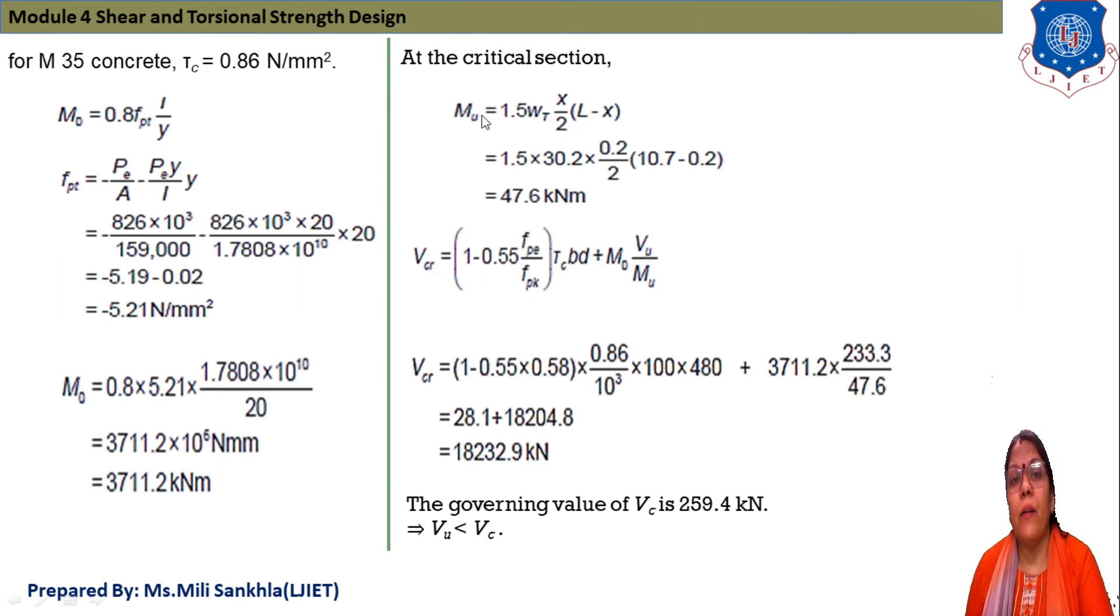fpe/fpk means stress 860/1470 equals 0.58. M₀ equals 0.8fpt·I/y. fpt equals -Pe/A - Pe·y/I. Put all values we get fpt equals -5.21 N/mm², compressive taken as negative. M₀ equals 0.8 × 5.21 × 1.78 × 10¹⁰/20, value of M₀ we get 3711.2 kN·m.